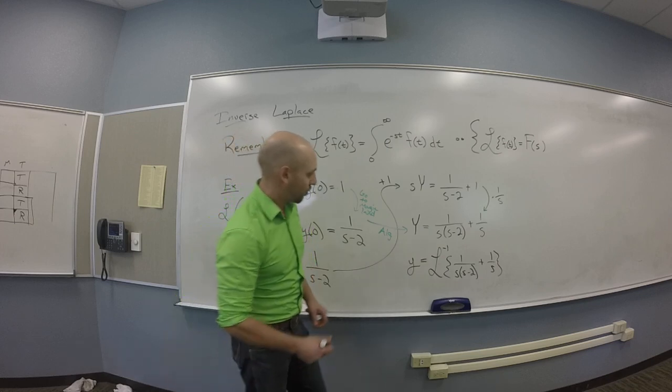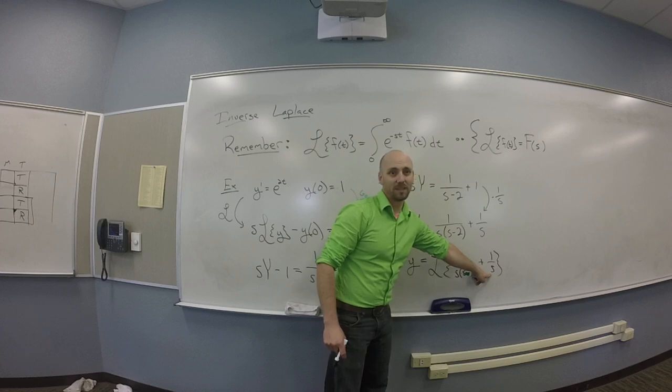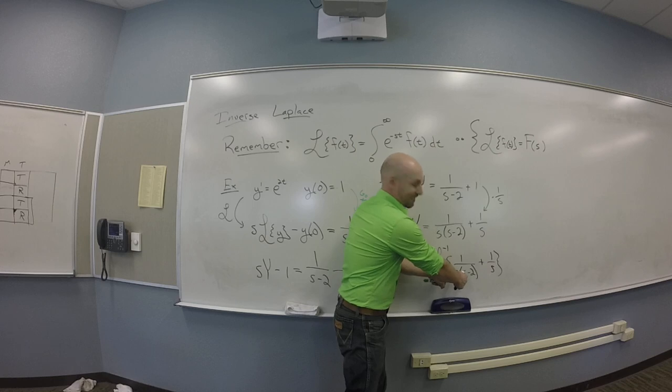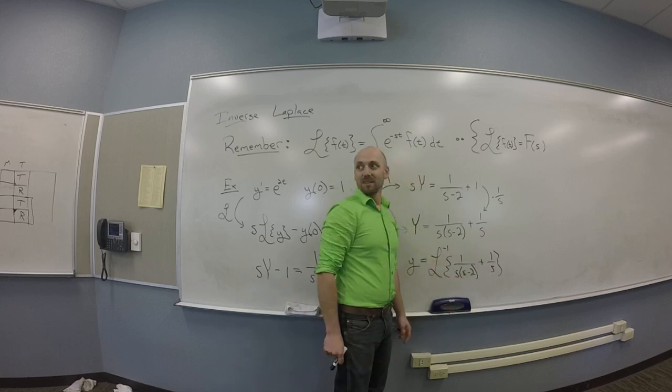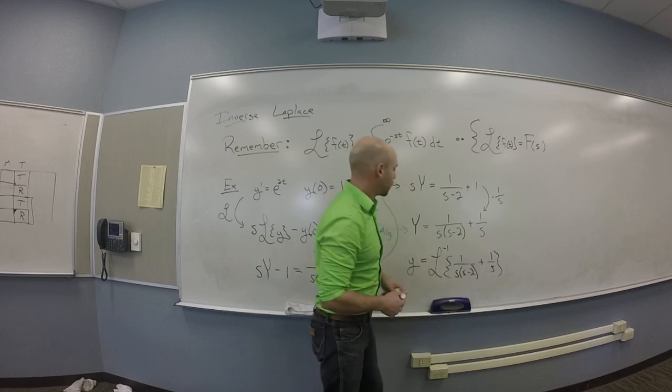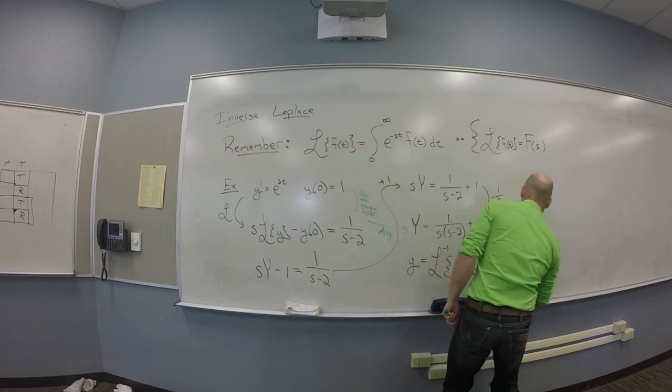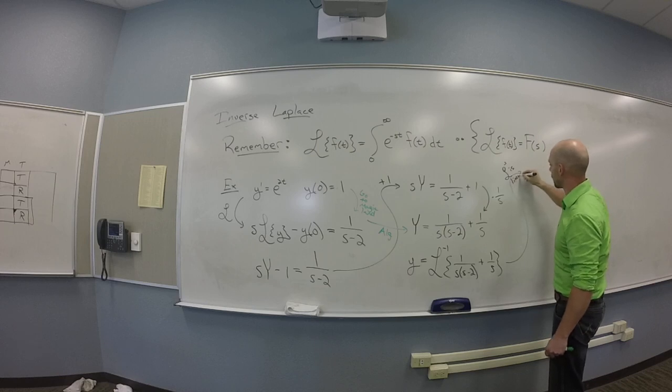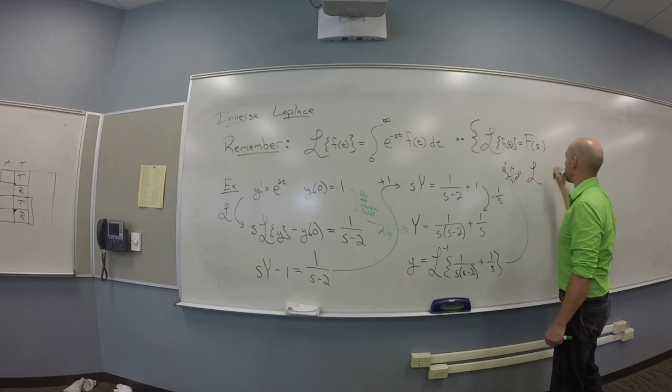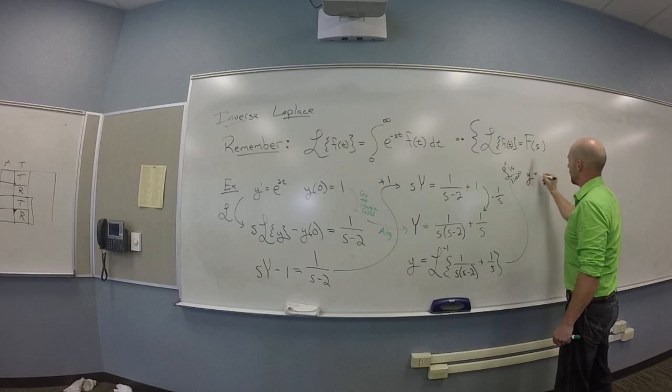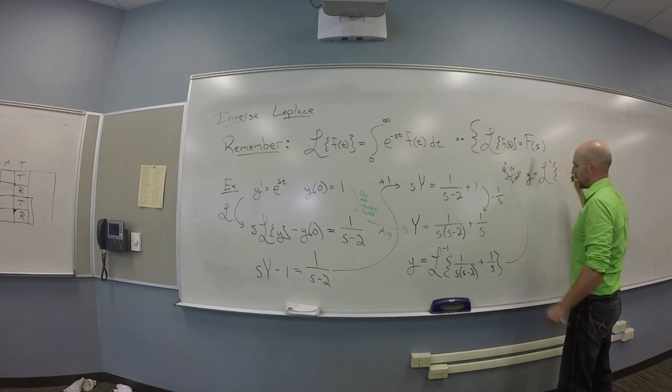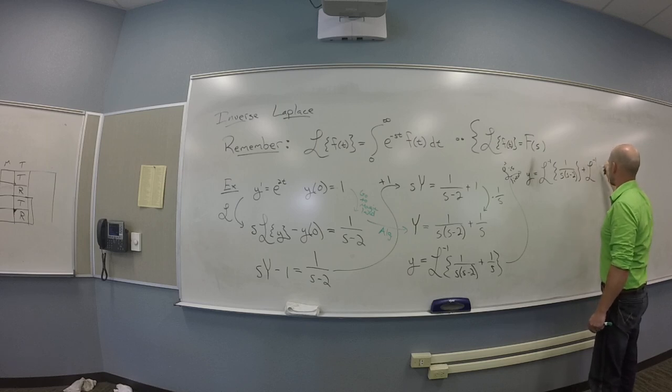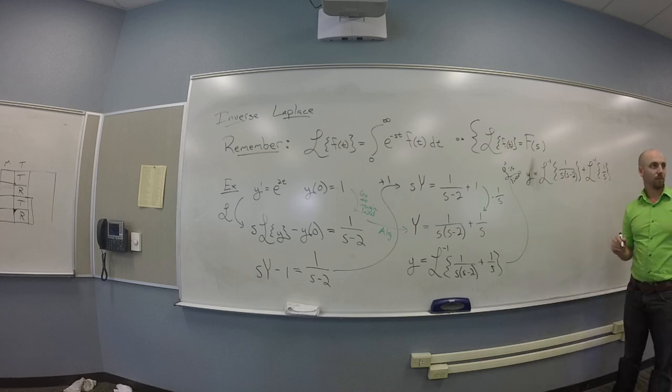Right now, that part, the 1 over s, that's probably 1. You guys with me on that? That thing may be more complicated. So do you guys want to try this one while we've got it? Let me do something that's not in evidence. This is the inverse Laplace transform is linear. Meaning I can break that into little y is the inverse Laplace transform of 1 over s times s minus 2 plus the inverse Laplace transform of 1 over s.